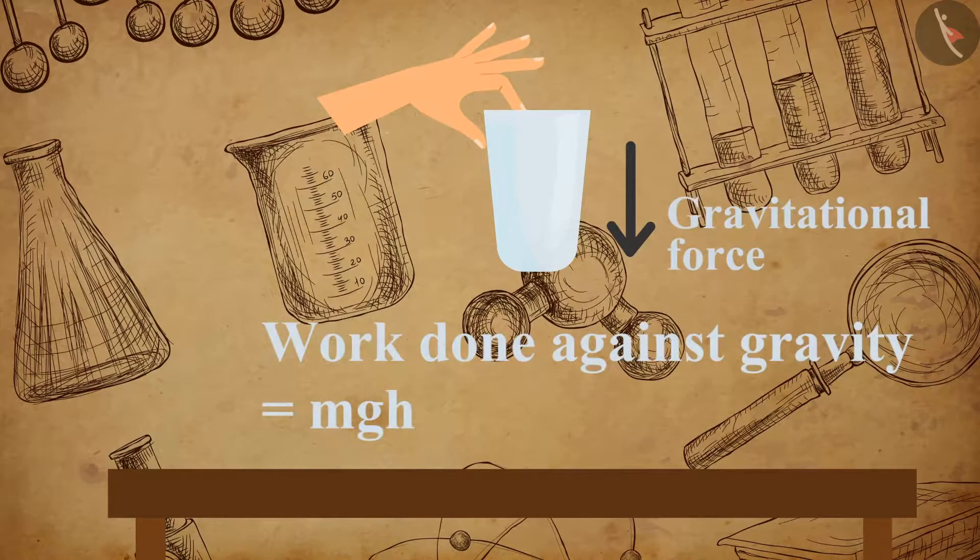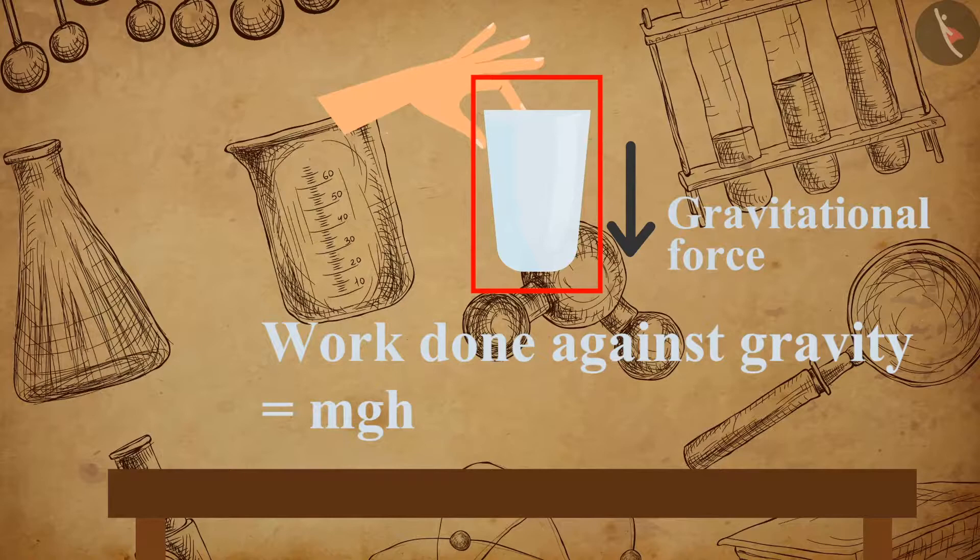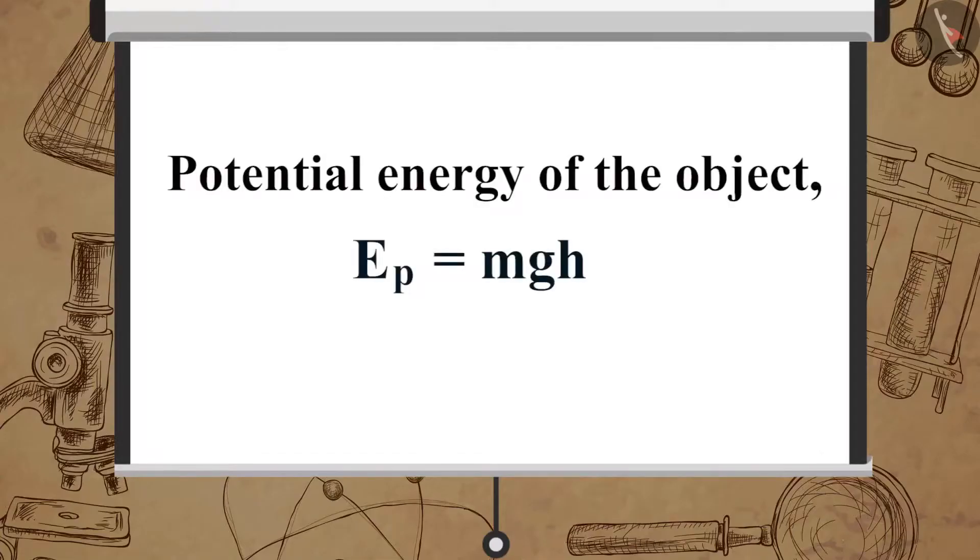As the work done on the object against gravity is MgH, so the energy gained by the object is MgH, which is the potential energy of the object. Therefore, potential energy of the object, E_P is equal to MgH.